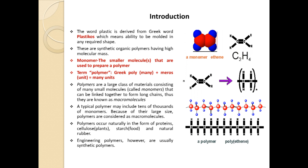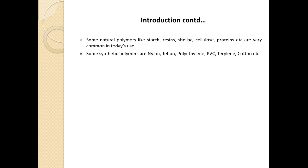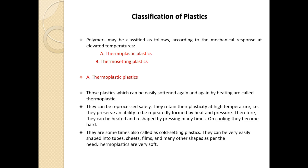Examples of natural polymers include starch, resin, cellulose, and protein. Your hairs or leaves of a plant are examples of natural polymers. Some synthetic polymers are nylon, teflon, polyethylene, PVC, and terylene, which are derived in the laboratory.